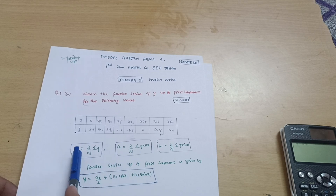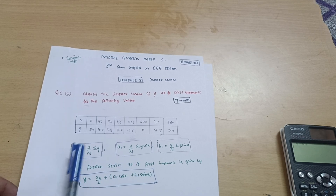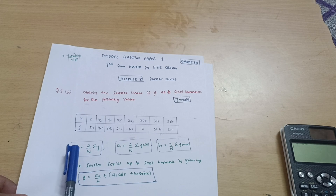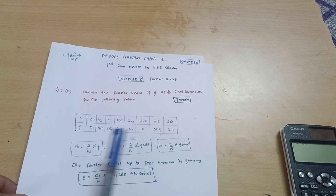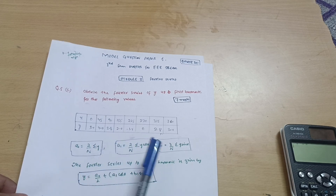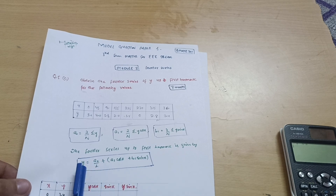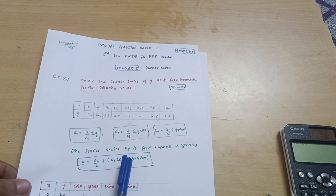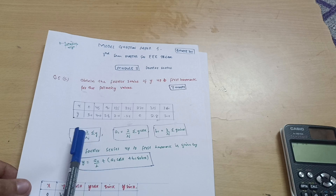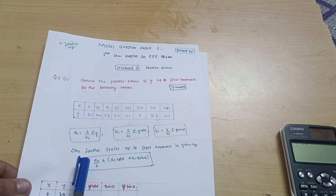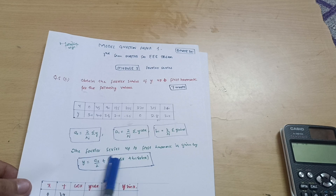The first harmonic coefficients you need are a₀, a₁, and b₁. Once you calculate these values, the Fourier series for the first harmonic is given by: y = a₀/2 + a₁·cos(x) + b₁·sin(x). Just calculate a₀, a₁, and b₁, then substitute those values into this equation to get the required Fourier series.